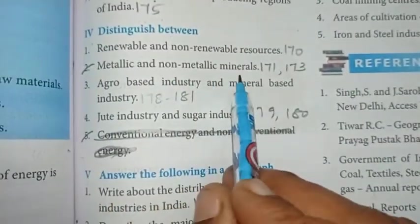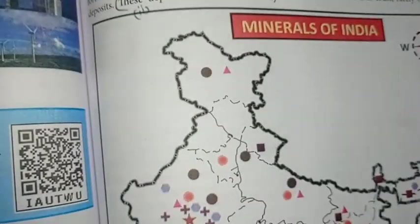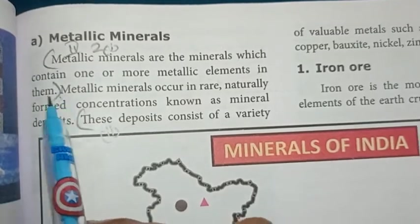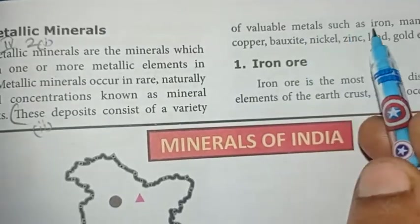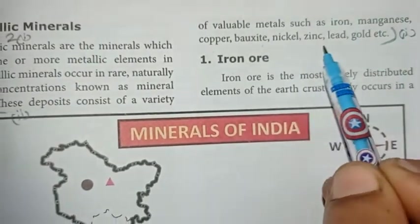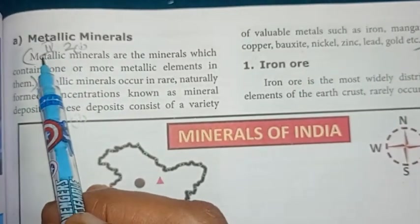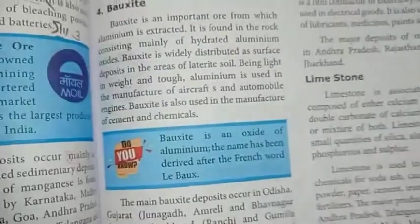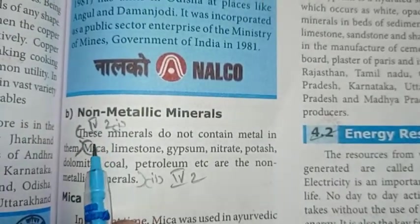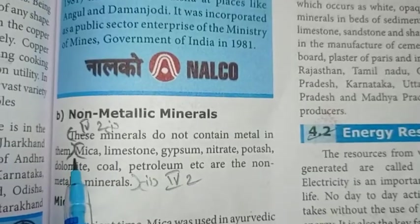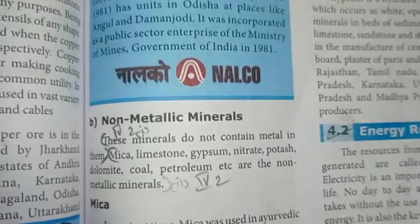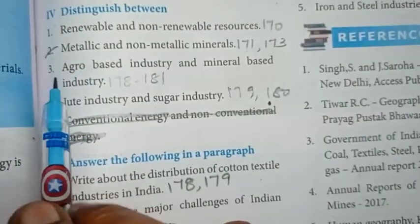Roman number 4 - distinguish between: first one, renewable and non-renewable resources. Page number 175. Renewable resources are those which have natural regeneration after their utilization. Non-renewable resources are those that cannot be replaced again after utilization. Examples: coal, petroleum, natural gas, etc.